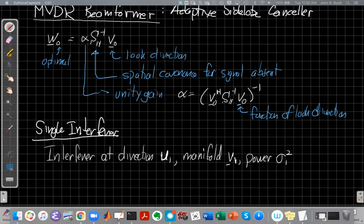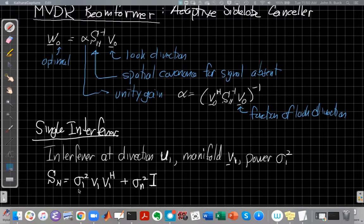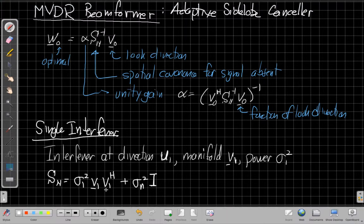When we have the single interferer, we saw in class last time, our spatial covariance matrix looks like this, where we have sigma 1 squared times the outer product of the manifold vector, plus background white noise. We have a two-part video approach today. The first video, we're going to use some linear algebra results to get an equation for Sn inverse for this simple case. And then the second video, we'll go on and plug that in, plug it back into this equation and manipulate to understand what these array weights are doing.